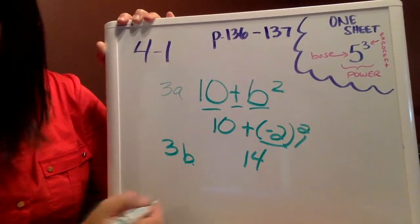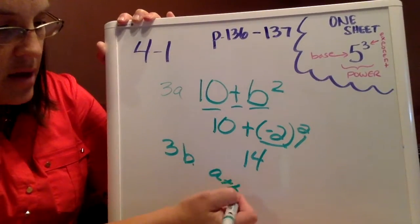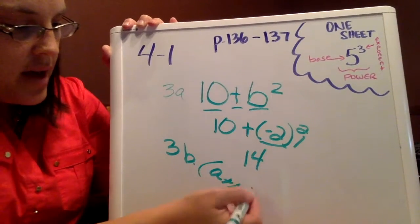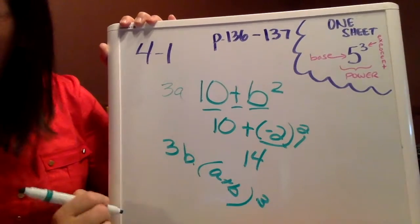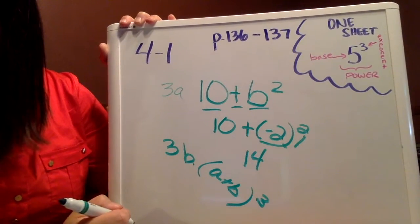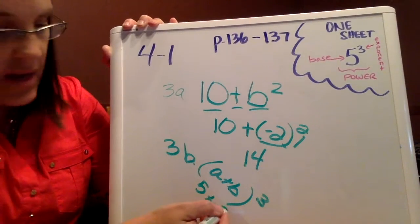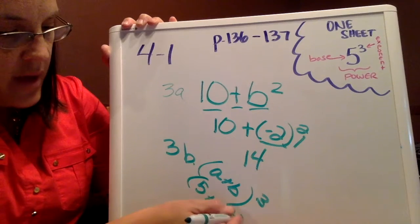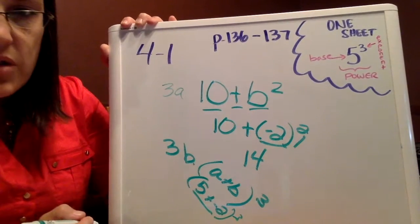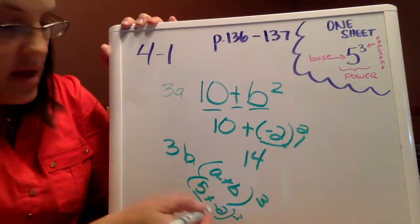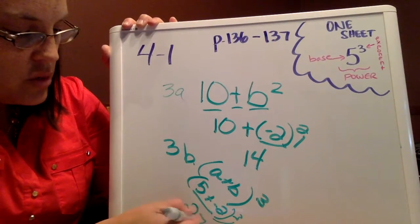3b is a plus b, the quantity cubed. And so a is 5 and b is negative 2. So we have 5 plus negative 2, which is 3. 3 cubed is 27.